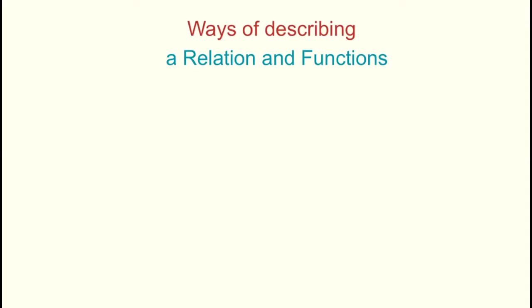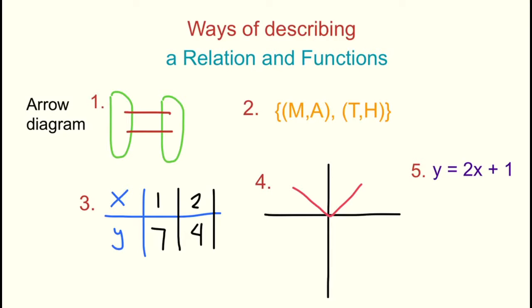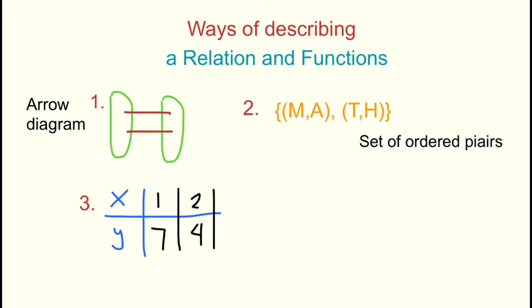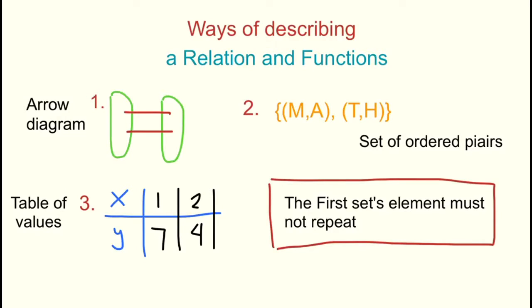Identify ways of describing a relation and a function. For arrow diagrams, set of ordered pairs, and tables of values, we should always keep in mind that the domain or the first set, its element should not repeat.